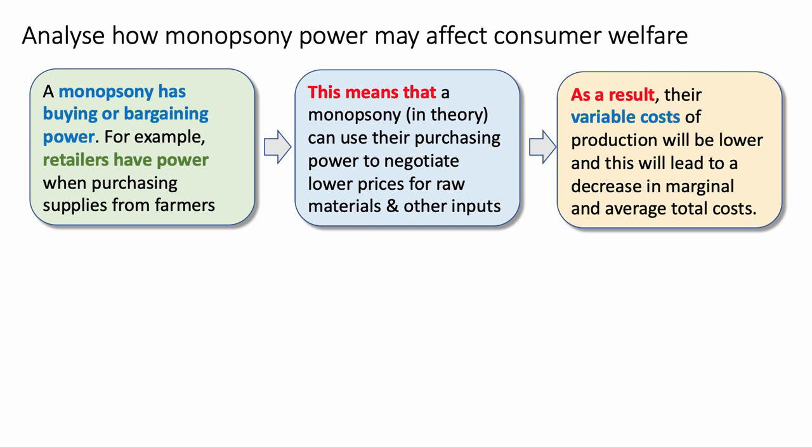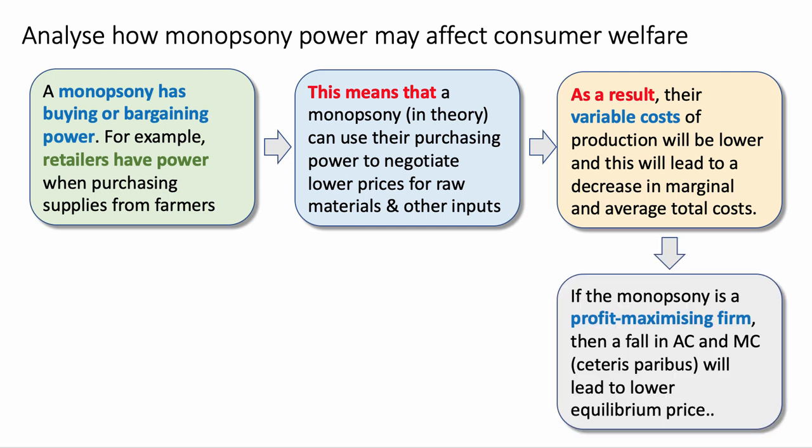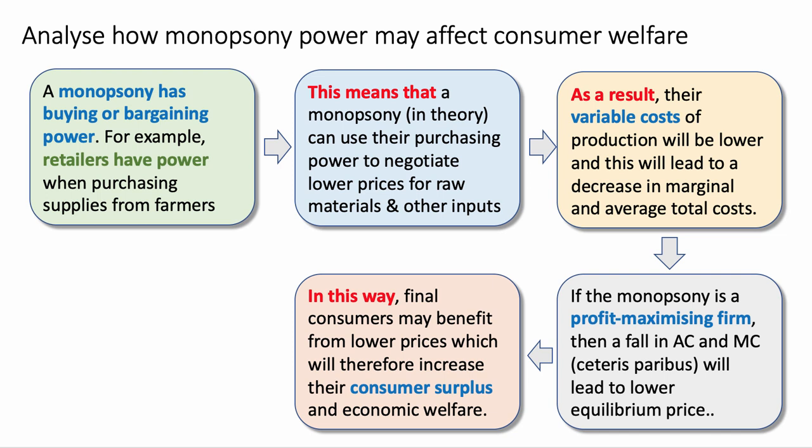Making the link between monopsony power and cost — specifically variable cost — is a good analytical chain. If the monopsony is a profit-maximizing firm, then a fall in average total cost, other things being the same, will lead to a lower equilibrium price. In this way, final consumers may benefit because prices will be lower, and that will therefore increase their consumer surplus and economic welfare. Key terms highlighted here include monopsony, variable cost, profit maximization, and consumer surplus.